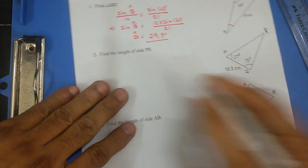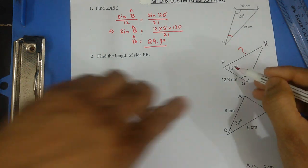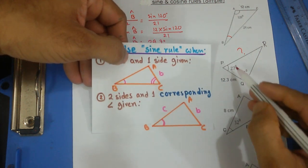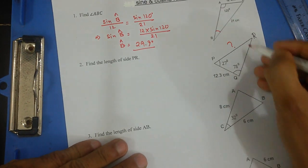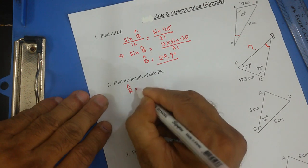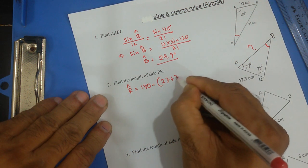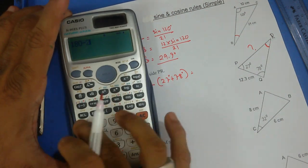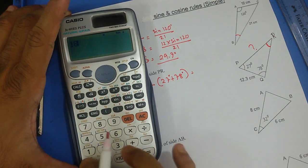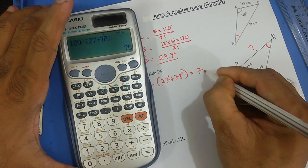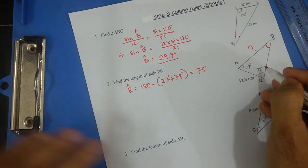Next, find the length of side PR. We need to find PR. Two angles and one side are given, so we're going to use the sine rule again. Note that PR's opposite angle is not given directly, so we need to find angle R first. Angle R equals 180 minus 27 plus 78, which gives us 75 degrees.